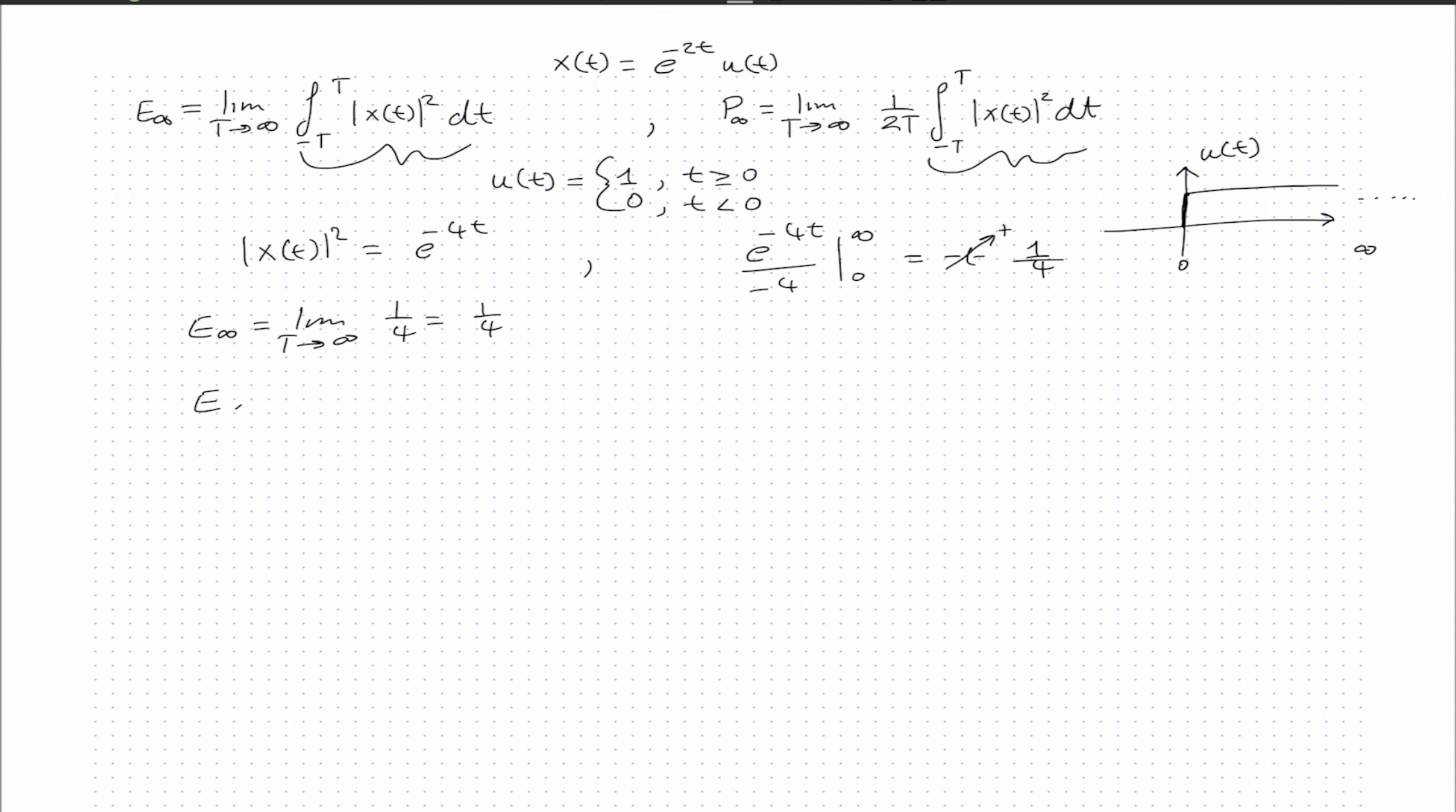Notice that E, the energy of this signal, is less than infinity. Since the energy is finite, we know the average power for this signal will equal 0. Let's prove that.